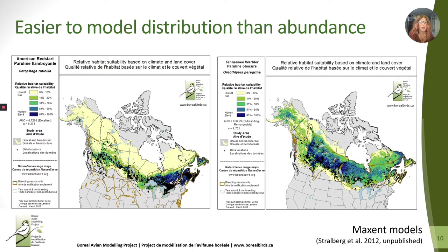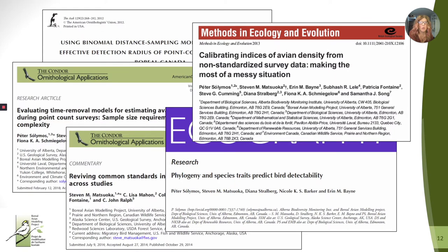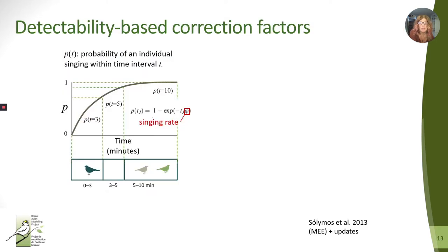Because we're working with an ad hoc dataset, our data are collected with a variety of different protocols under a range of conditions. This standardization problem is one that BAM has spent much of its early years working on. Most of this work was led by Peter Solymos, and there are now several papers you can refer to. The basic approach is summarized in a paper published in Methods in Ecology and Evolution in 2013. What we've done is develop a method to convert count data from disparate sources into density using detectability-based correction factors.